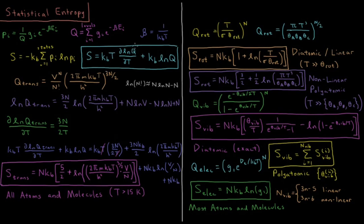When we have the total partition function of the system but are not necessarily concerned about individual probabilities, the entropy of the system equals the Boltzmann constant times the temperature times the partial derivative of the natural log of the partition function with respect to temperature, plus the Boltzmann constant times the natural log of the partition function. We'll apply this to translational, rotational, vibrational, and electronic partition functions of atoms and molecules.